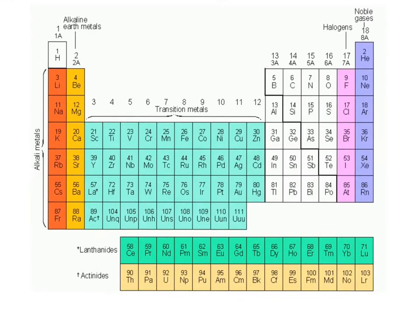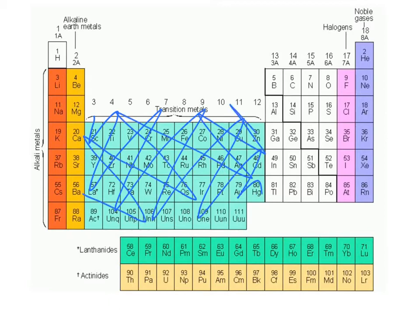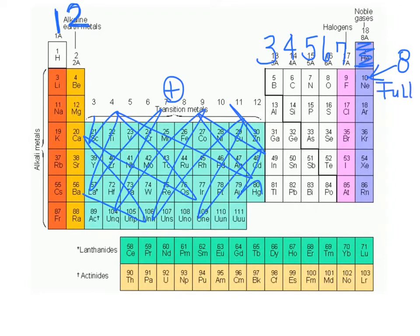Before we do that, let's talk about the differences in electrons as we go across the table. Ignoring transition metals for now, everything in column 1 has 1 valence electron, column 2 has 2, and as we go across: 3, 4, 5, 6, 7, and then everything except helium has 8. Having 8 represents a full outer shell, and this organization determines the behavior of atoms.